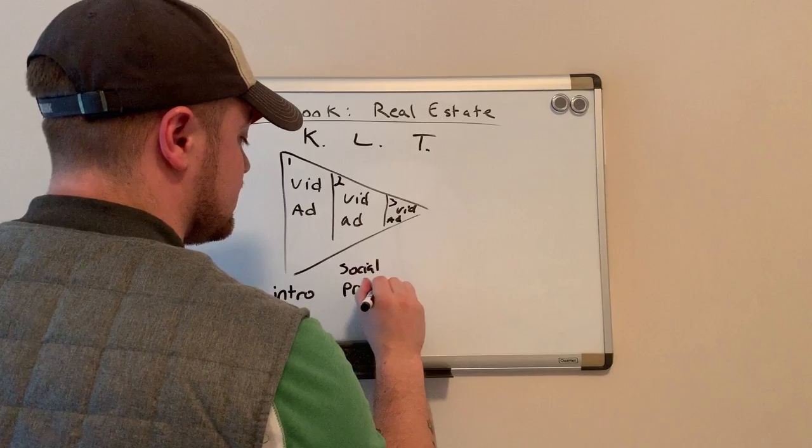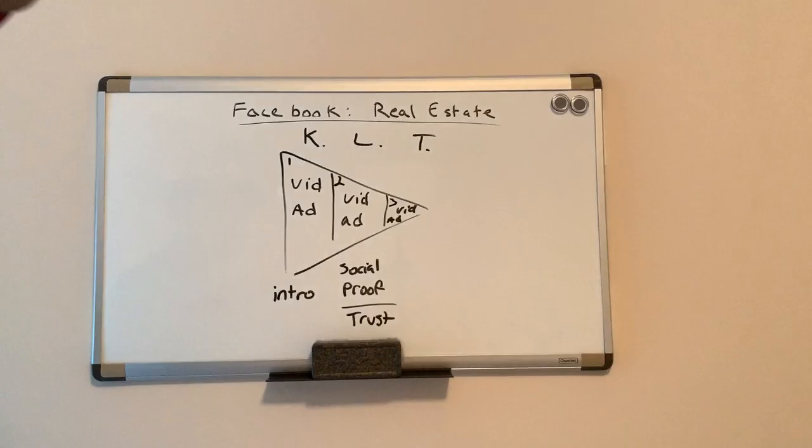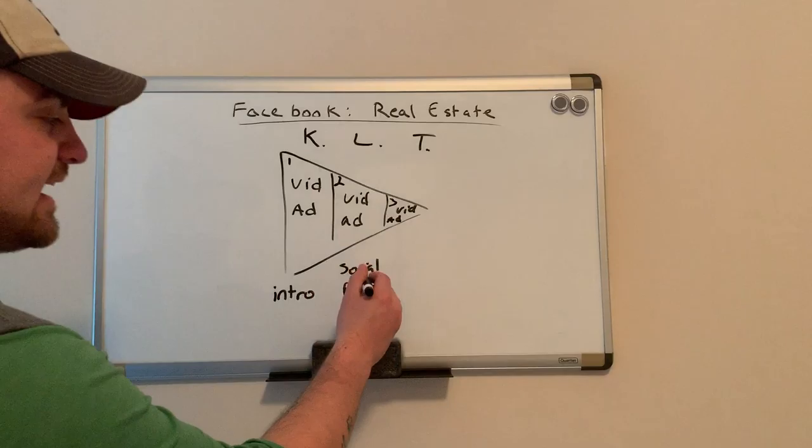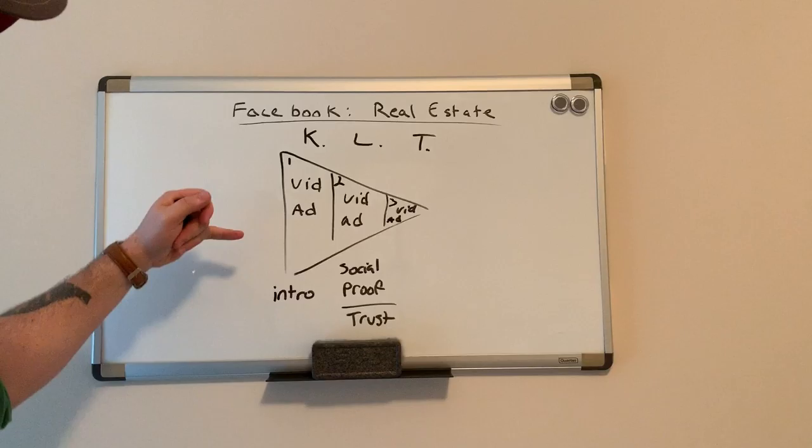The second one is where you use social proof to build the trust. So the people that watch this video, you remarket them with this second video. So the same people that heard your intro are now going to see a client testimonial. They're going to hear a story about you selling a home, anything to get them to have that relationship built.